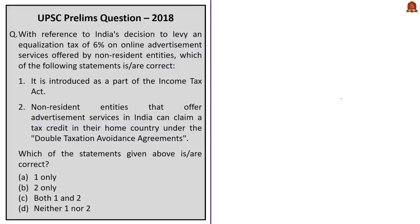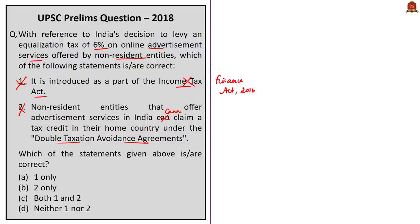The 2018 UPSC Prelims question: With reference to India's decision to levy an equalization tax of 6% on online advertisement services offered by non-resident entities, which of the following statements is or are correct? Statement 1: It is introduced as part of Income Tax Act. Statement 2: Non-resident entities that offer advertisement services in India can claim a tax credit in their home country under double taxation avoidance agreements. Both statements are incorrect — equalization levy was introduced under the Finance Act of 2016, not the Income Tax Act of 1961, and global companies cannot claim a tax credit under double taxation avoidance agreements. The correct answer is option D.